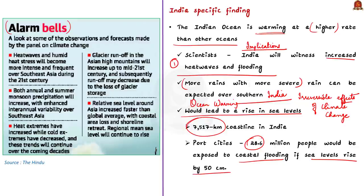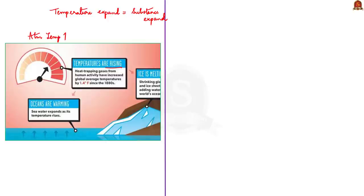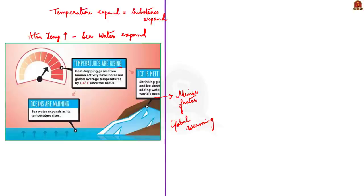When temperature increases, any substance tends to expand — molecules move farther apart — and the same happens with ocean water. This thermal expansion is the major factor causing sea level rise. Apart from this, melting glaciers also play a role: in a global warming situation, ice melts faster than usual and the meltwater discharges into the sea. When sea levels rise, coastal areas and islands get adversely affected.